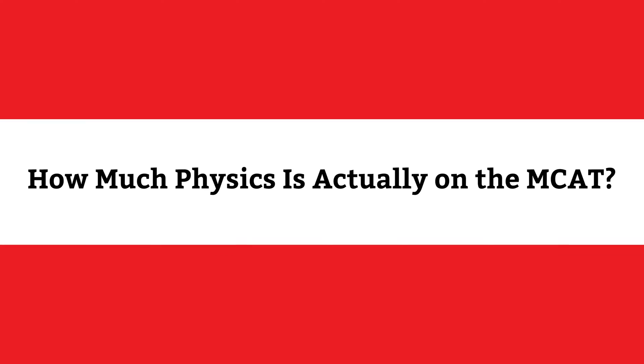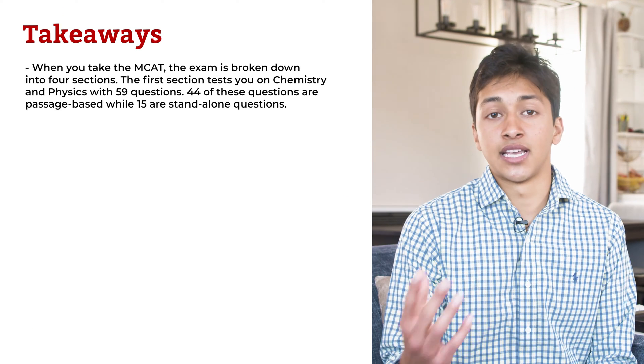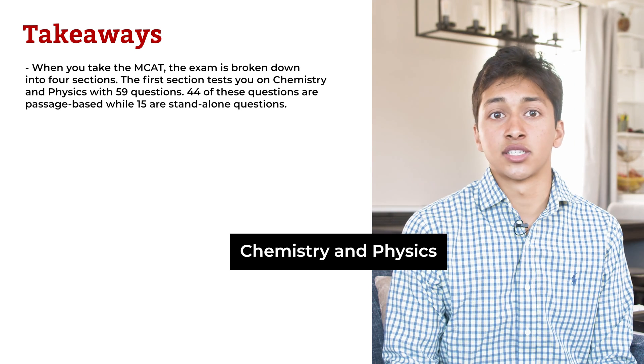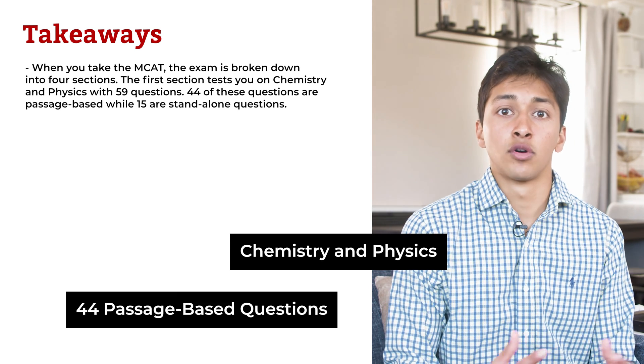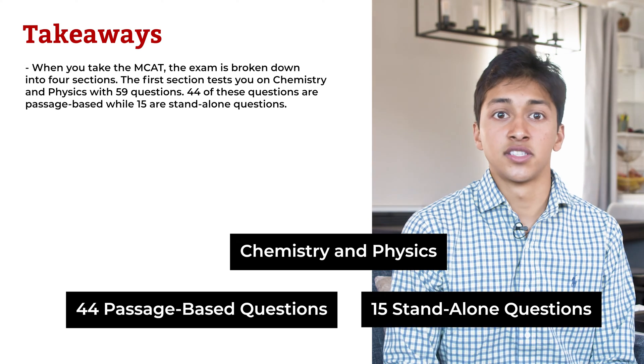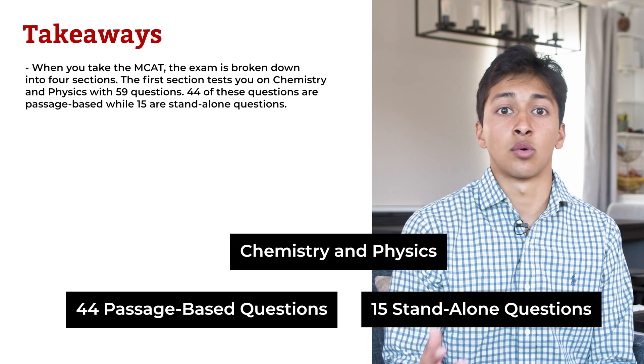How much physics is actually on the MCAT? First, a little MCAT physics overview. When you take the MCAT, the exam is broken down into four sections. The first section tests you on chemistry and physics with 59 questions. Forty-four of these questions are passage-based while 15 are standalone questions. Physics falls into this chemistry and physics or chem-phys section.